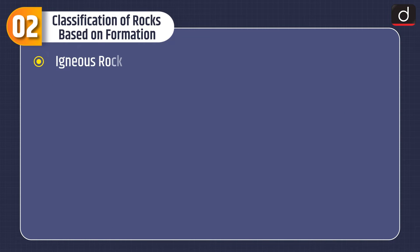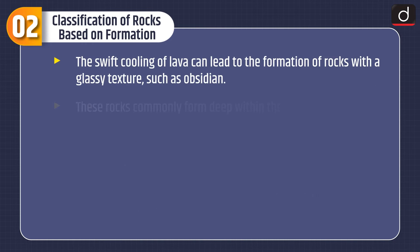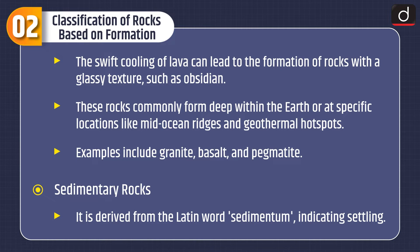Moving on to classification of rocks based on formation. First is igneous rock. Igneous rocks originate from molten materials that solidify upon cooling. When this molten material is below the Earth's surface, it is referred to as magma. Once magma breaches the Earth's surface, often during volcanic eruptions, it is called lava. The swift cooling of lava can lead to rocks with a glassy texture, such as obsidian. These rocks commonly form deep within the Earth or at mid-ocean ridges and geothermal hotspots. Examples include granite, basalt, and pegmatite.